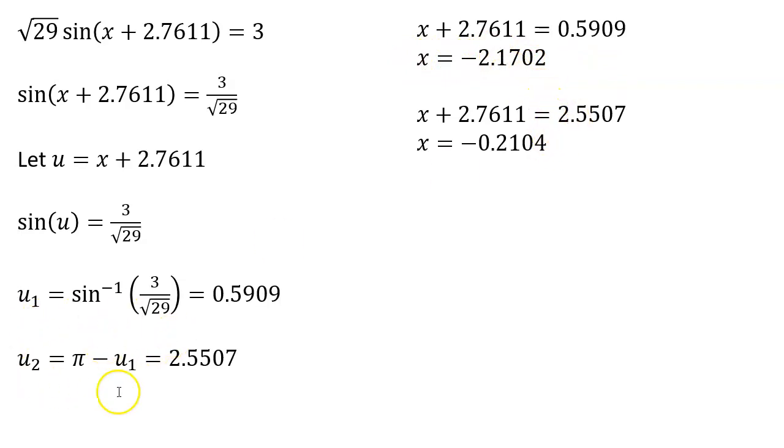We do the same thing with our second solution, replacing the u with x plus 2.7611, and that's going to equal our u value, the 2.5507, subtract from both sides, and we end up with x equals negative 0.2104.